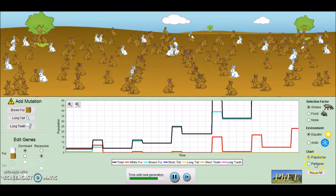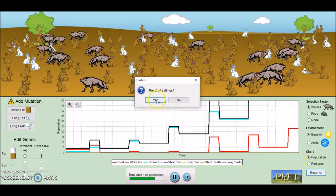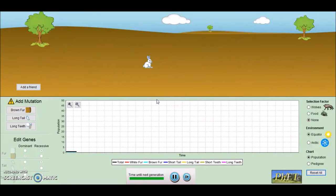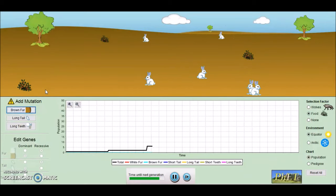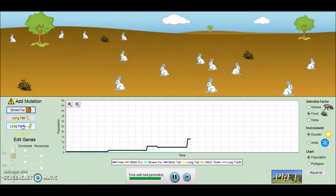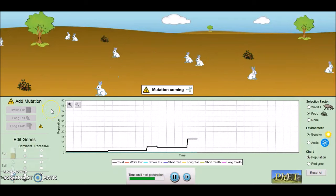So let me reset this and have another go with something else. So if we add in quite a lot of food and then we give our bunny a friend. Now, bunnies are going to do what bunnies are going to do. I'm not going to add in the mutation for brown fur this time. I'm going to add in the mutation for long teeth.